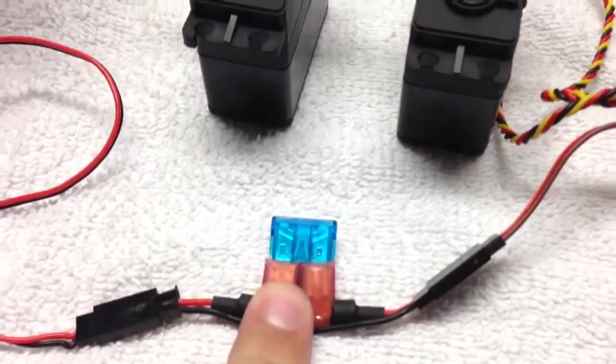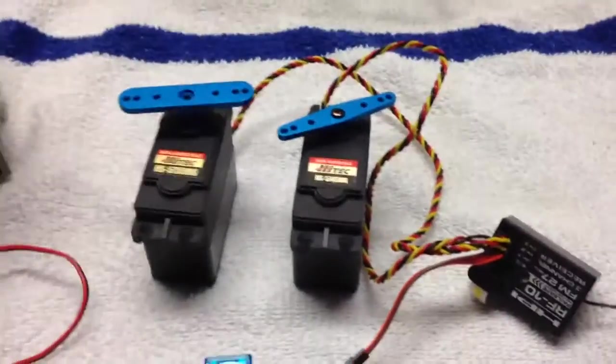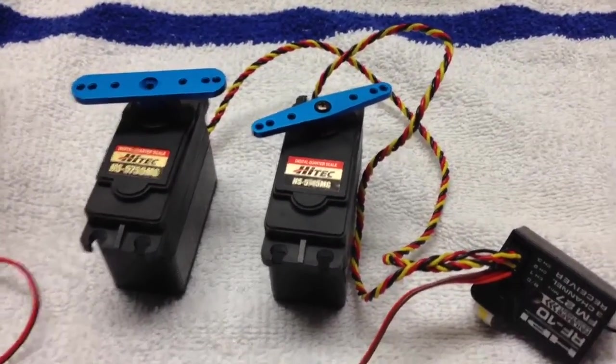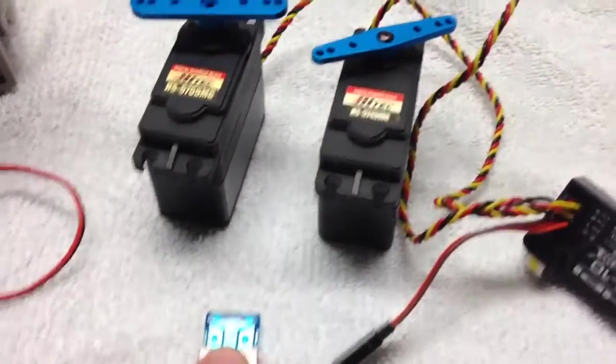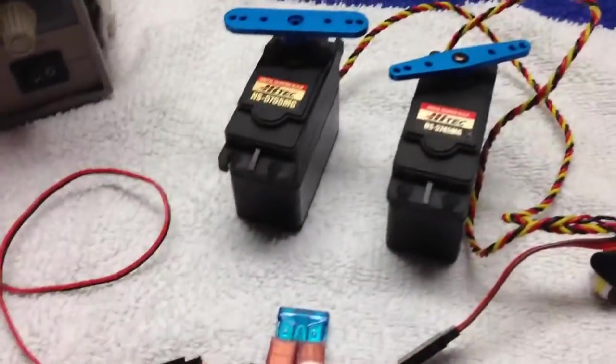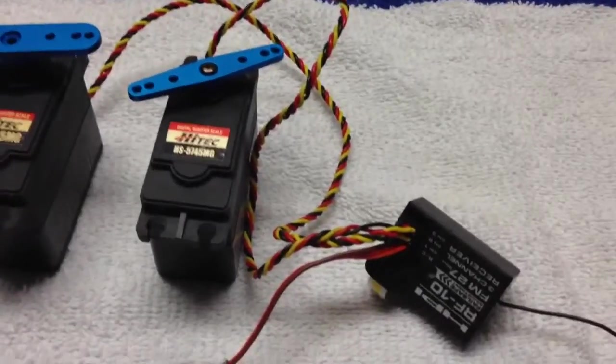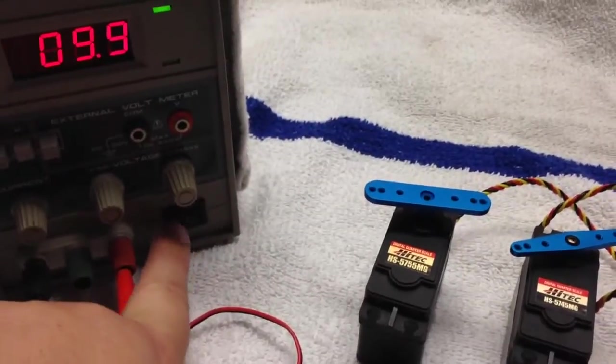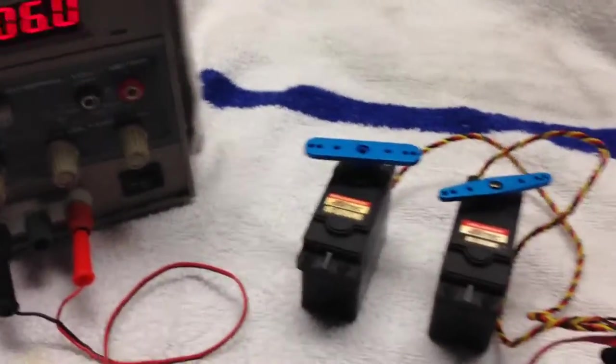Got a KillerRC inline fuse holder in case one of these servos should decide to short-circuit, our fuse here will blow. It'll keep us from melting any wiring or messing up the receiver or anything. So let's play around with the voltage here, see if anything interesting happens.